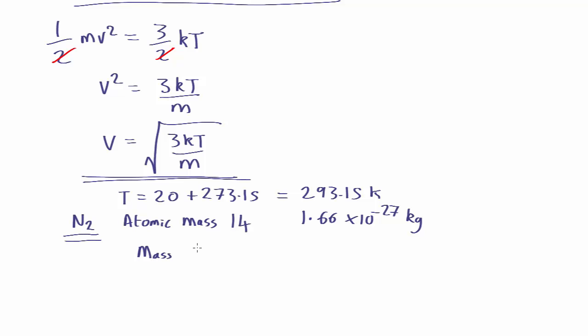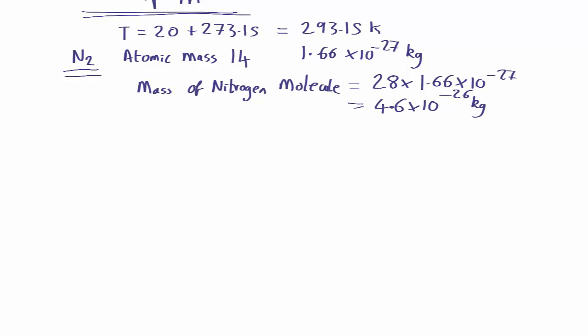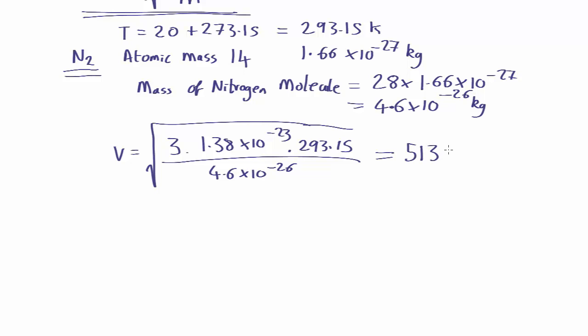So the mass of a nitrogen molecule equals 4.6 by 10 to the minus 26 kilograms. Now we have all the numbers we need to put into the equation. So we end up with the velocity equals the square root of 3 times Boltzmann's constant, which is 1.38 by 10 to the minus 23, times the temperature, which is 293.15, all divided by the mass, which is 4.6 by 10 to the minus 26. And if you put that in your calculator, it comes out as 513 metres per second.